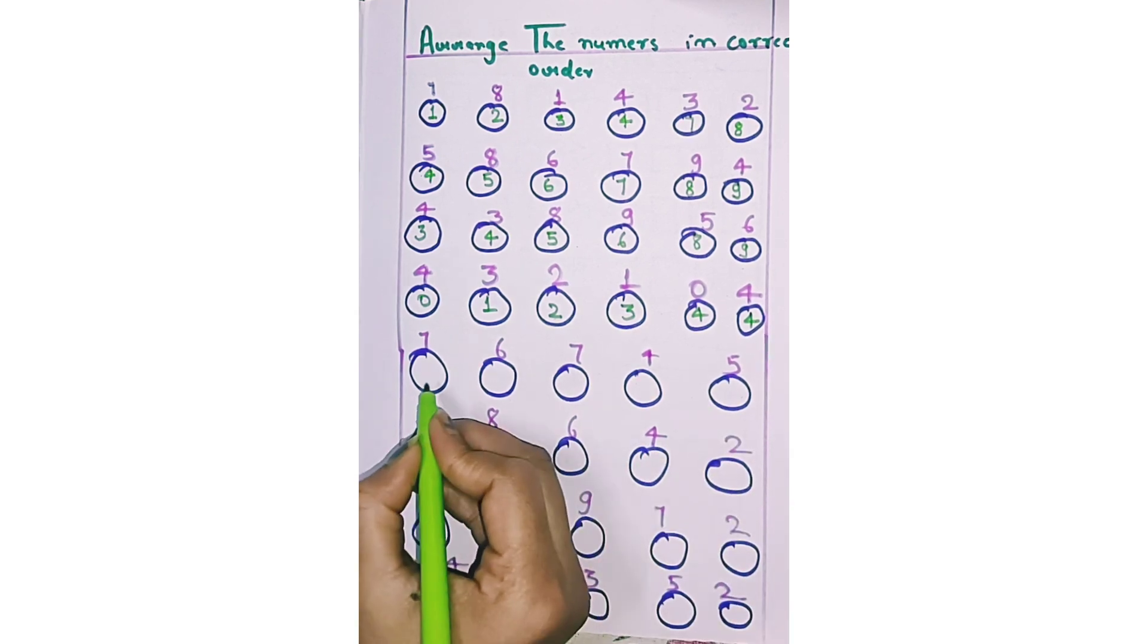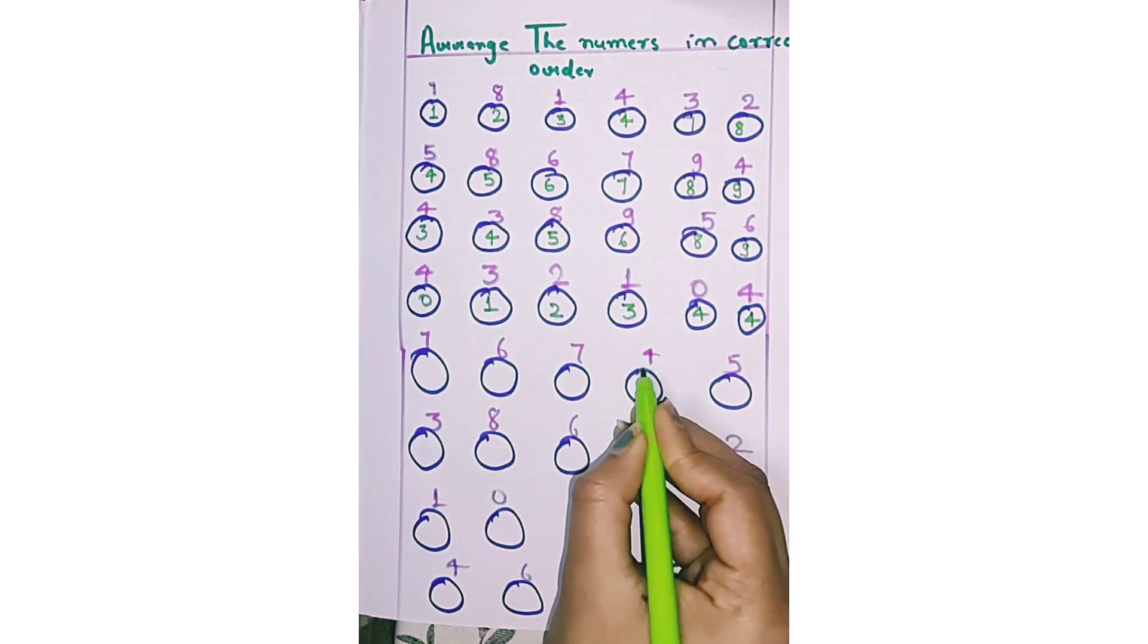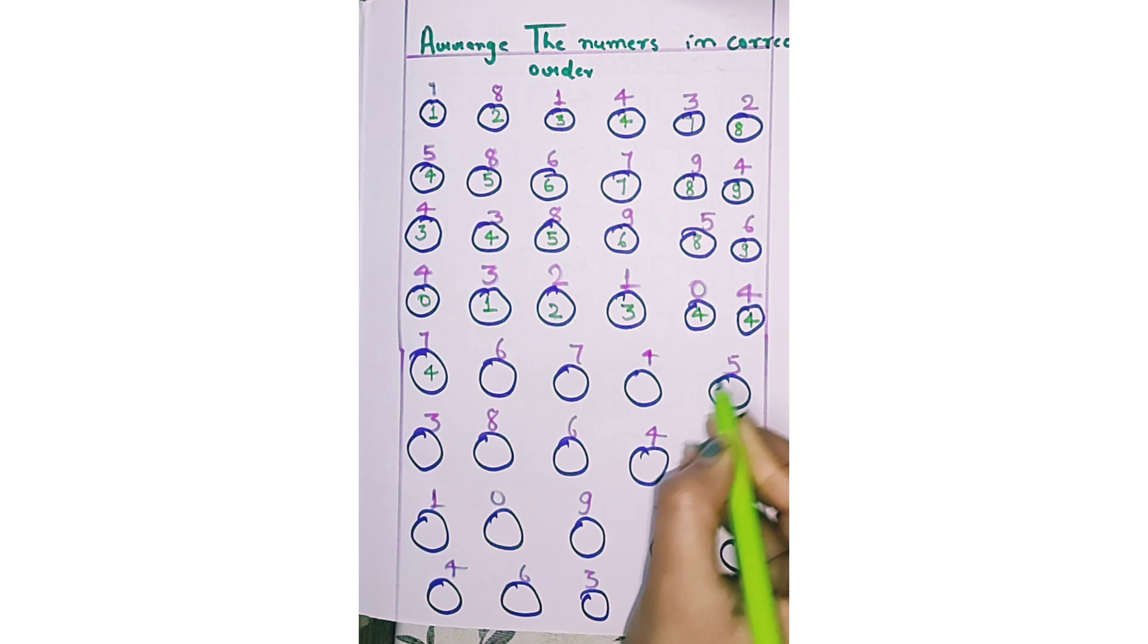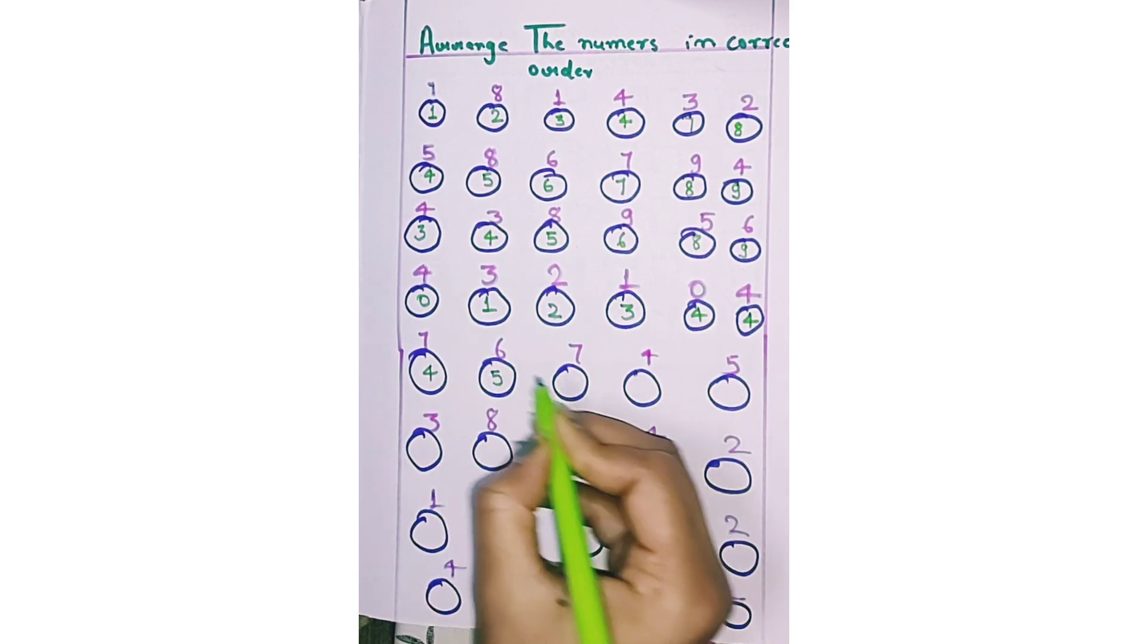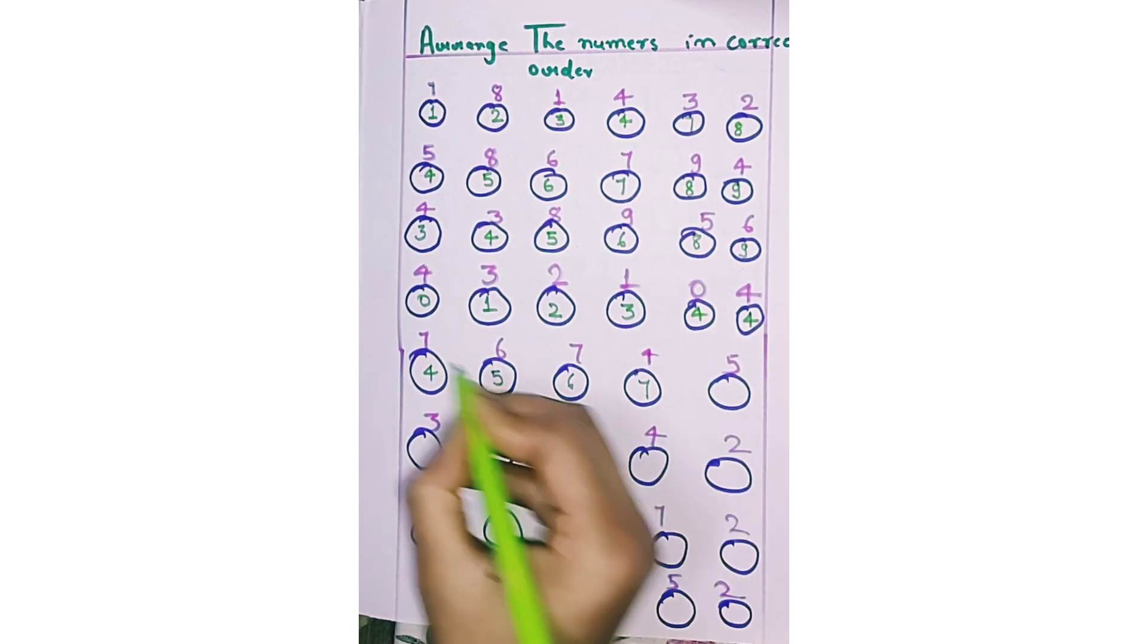Next 7, 6, 7, 4, and 5. First 4, again 5, again 6, again 7 and 7.